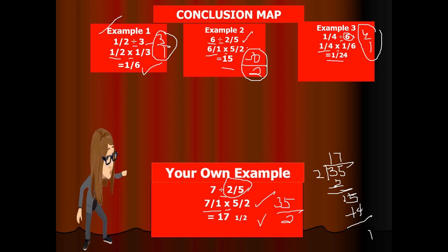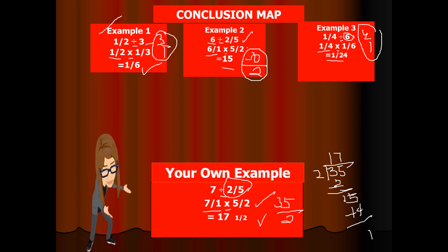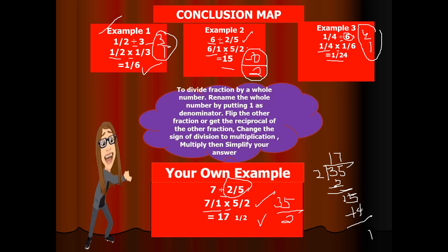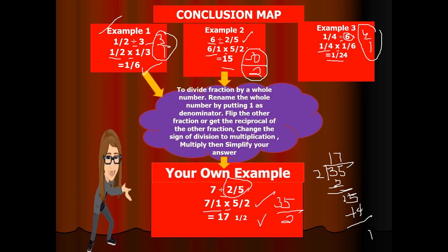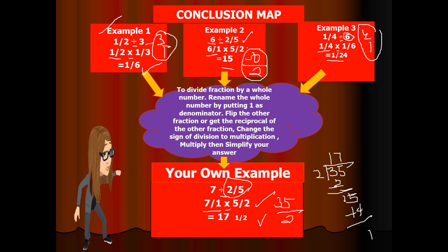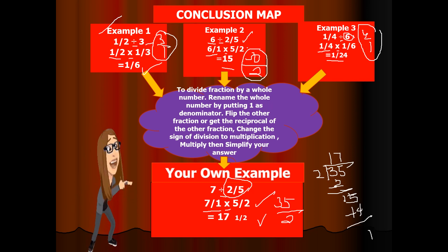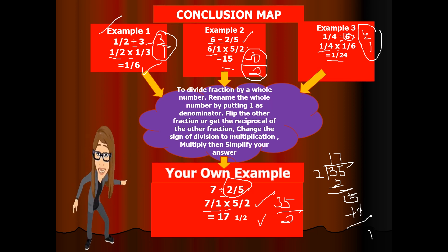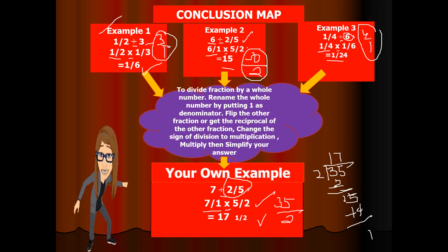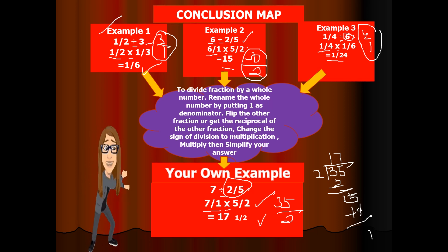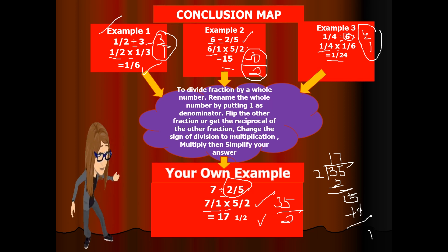With this, we have a conclusion: to divide a fraction by a whole number, rename the whole number by putting 1 as denominator, flip the other fraction or get its reciprocal, change the sign of division to multiplication, multiply, then simplify your answer.